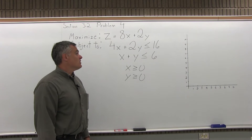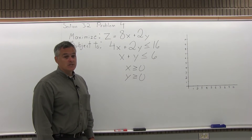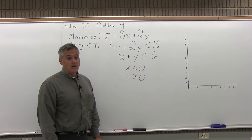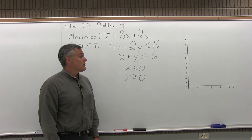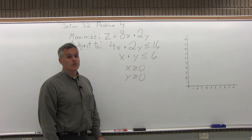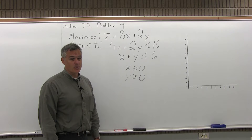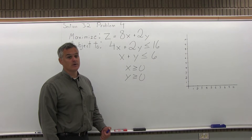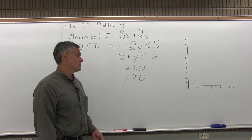To solve one of these problems, it's a four-part process. Part one is graph your feasible region, part two is label the corner points, part three is fill in the chart, and part four is state your solution.